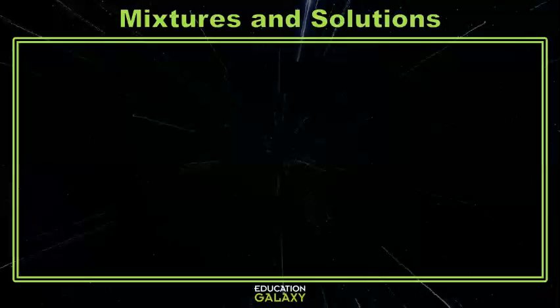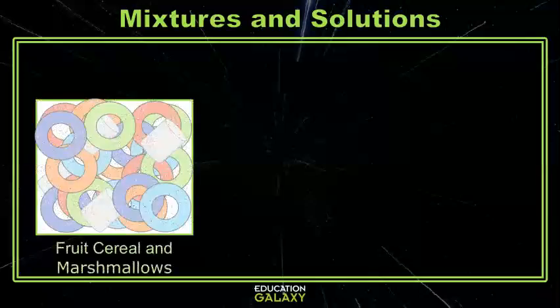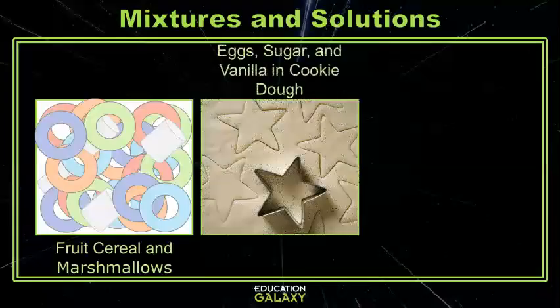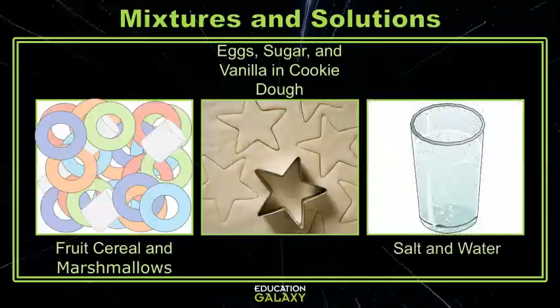Hey scientist, I was noticing a few days ago that sometimes when I mix things together, I'm able to pick them apart, like when I put fruit, cereal, and marshmallows together. Other times when I mix things together, I can't even tell that there are several things mixed in there, like when I make cookie dough out of eggs, sugar, and vanilla. And sometimes when I mix things into water, they just disappear. What's up with that?